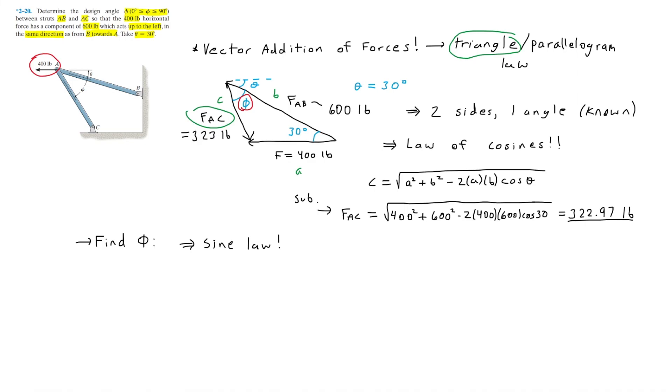This is because the sine law states that a length A divided by sine of an angle capital A is equal to a length B divided by the sine of an angle capital B. So on the drawing here, I'll label angle FAC as A. And to avoid confusion, I'll replace the B in the sine law with C, and label the 30 degrees as C.